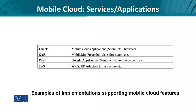Let's look at some example implementations which support mobile cloud features. We are all well conversant with Amazon Web Services. Not many people would know about HP Adaptive Infrastructure — it's something similar to AWS. This is an example of Infrastructure as a Service. For Platform as a Service, we could have Windows Azure services used on a mobile phone browser. And as Software as a Service, we could think about Salesforce and any other application running on the cloud.